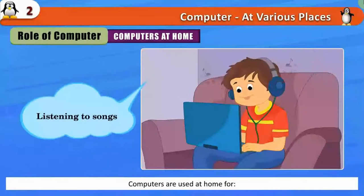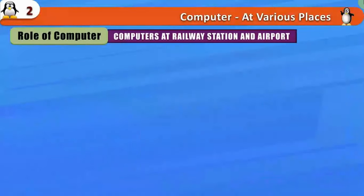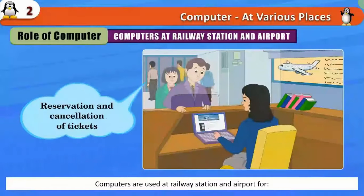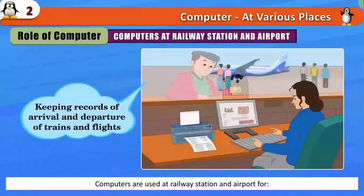Computers at Railway Station and Airport. Computers are used at railway stations and airports for reservation and cancellation of tickets, and keeping records of arrivals and departures of trains and flights.